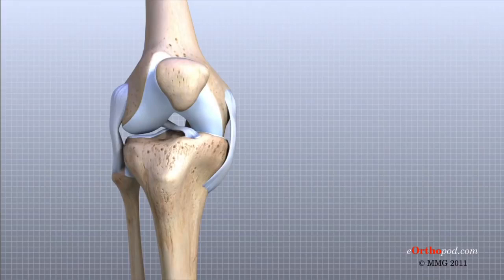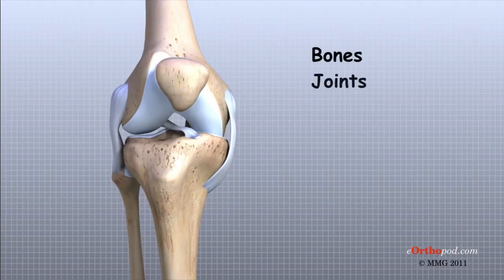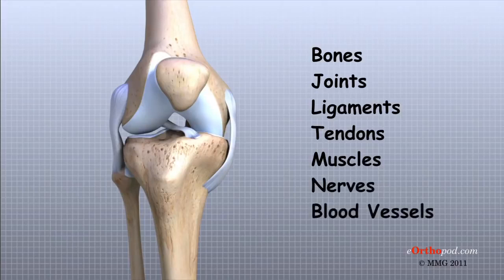The important structures of the knee can be divided into several categories. These include bones, joints, ligaments, tendons, muscles, nerves, and blood vessels.